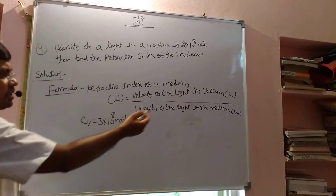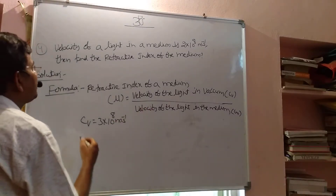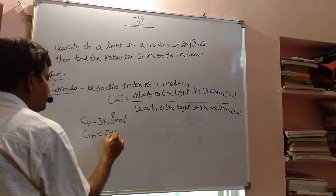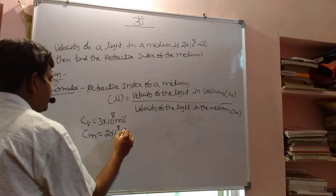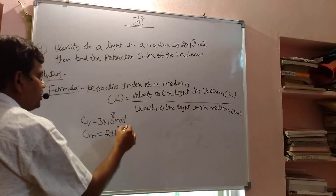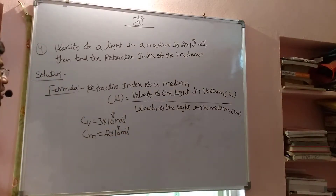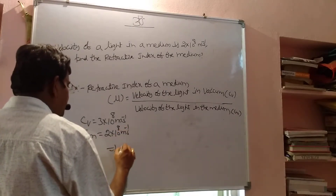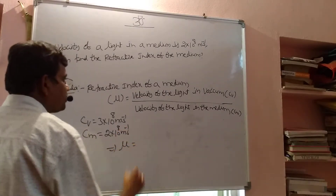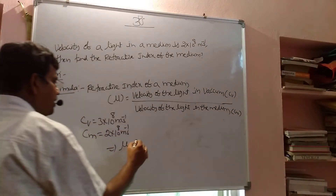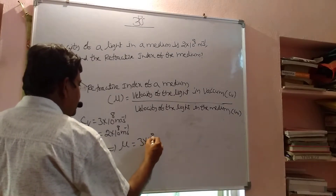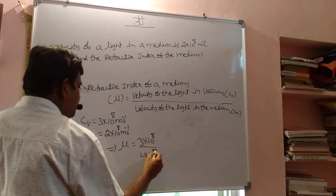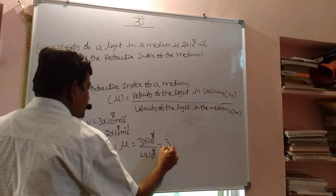The velocity of light in the medium is given as 2 × 10⁸ meter per second. Substituting these two values: mu equals 3 × 10⁸ divided by 2 × 10⁸, which gives 3 by 2.